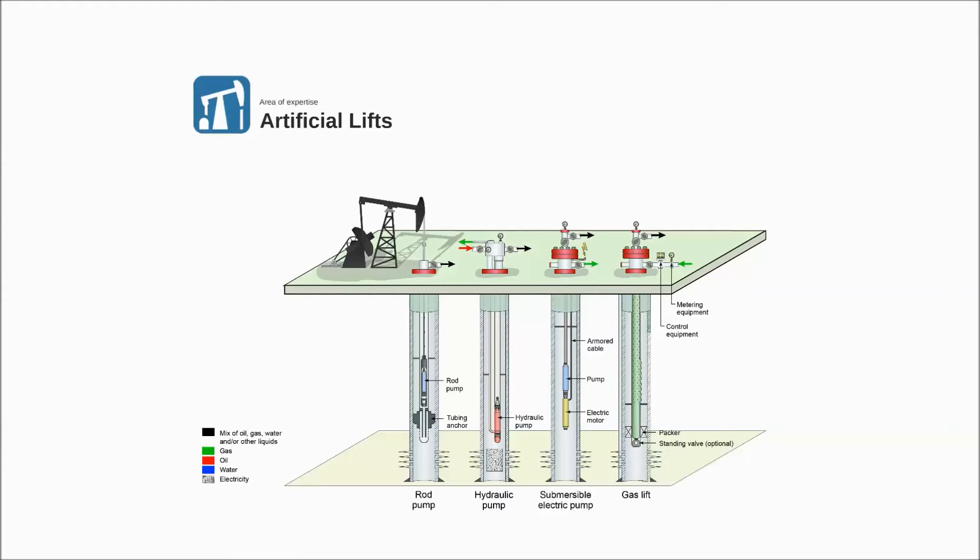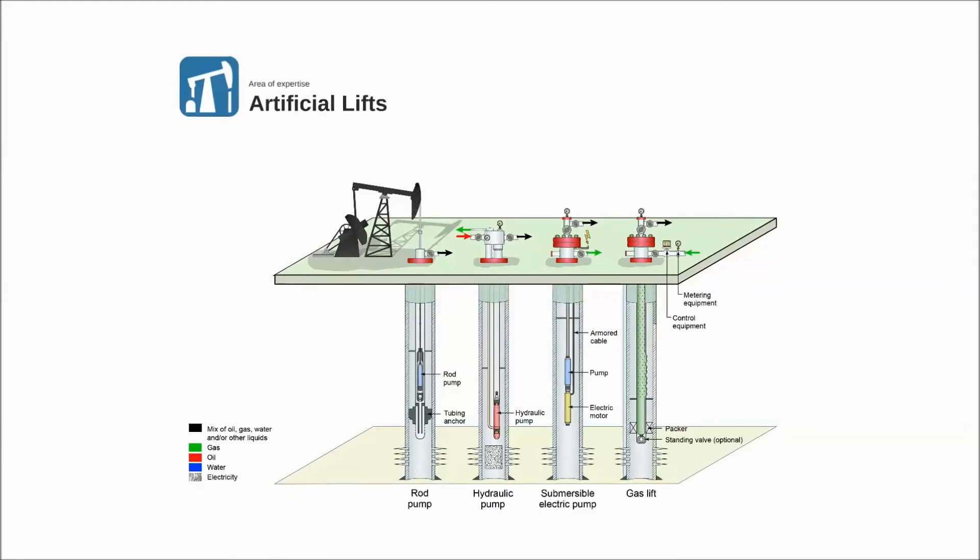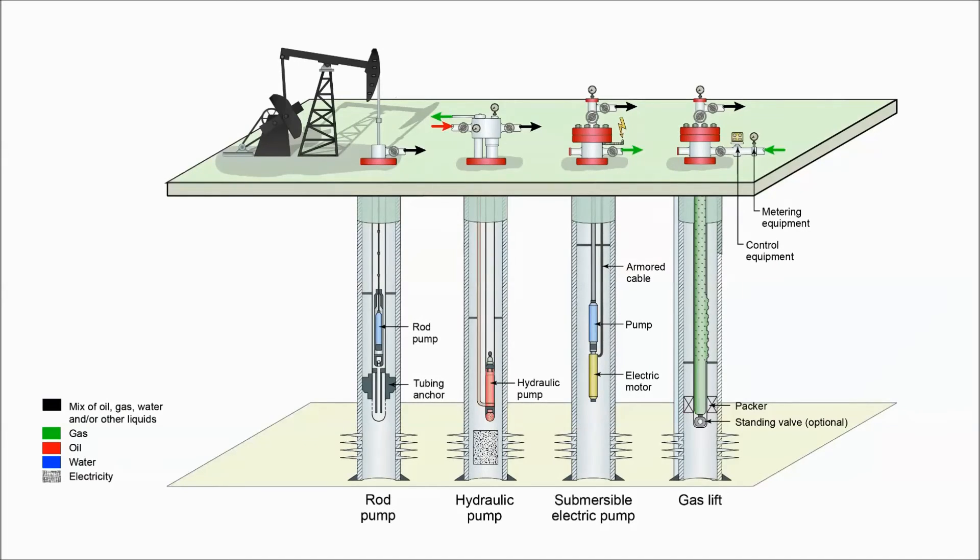There are many types of artificial lift methods in our business. In principle, there are two ways to aid the vertical flow of liquids. By introducing a pump down hole in the well, or by reducing the weight of the vertical liquid column.